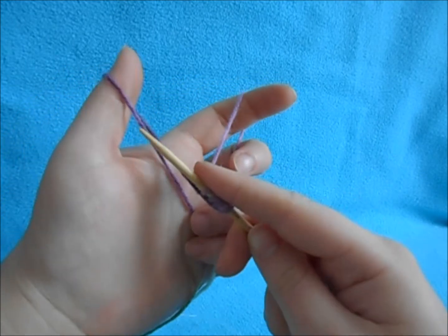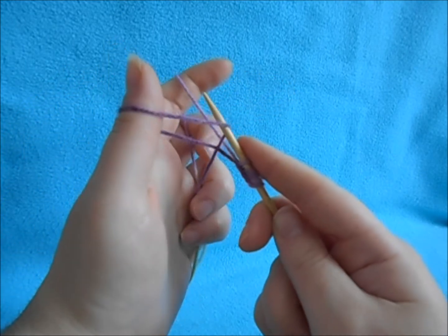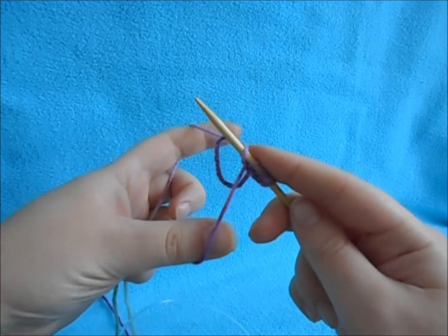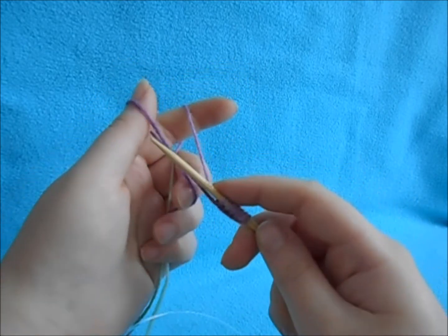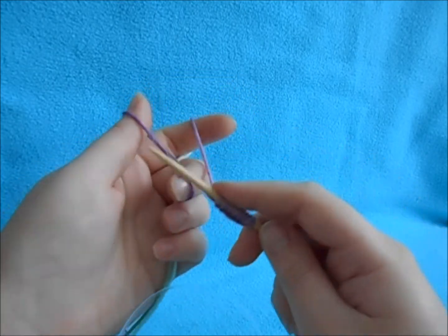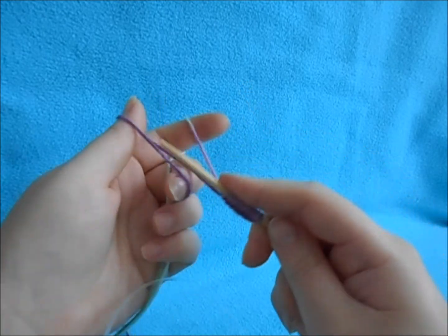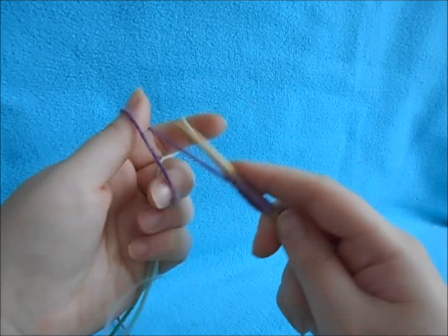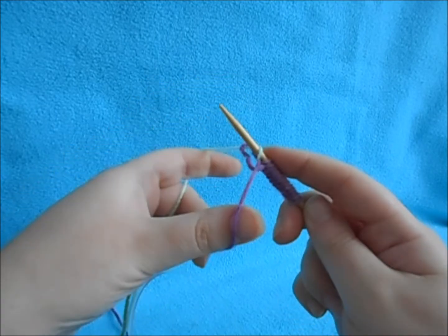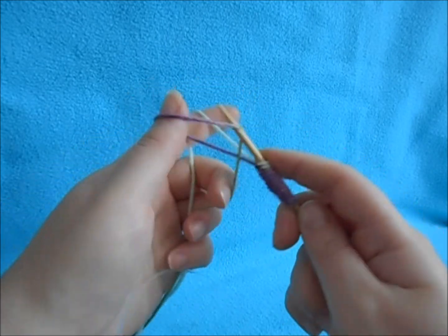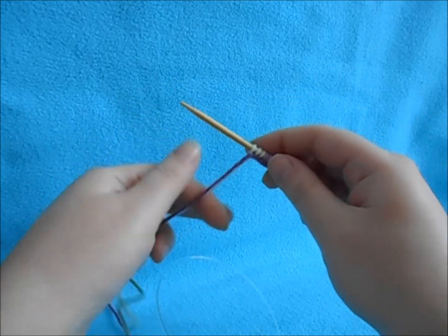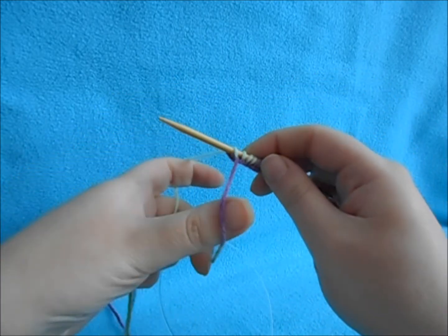So just remember the first loop on your thumb, around to the index finger, and back through the loop. Drop and tighten. And this is the cast on method that I like the best. There are a few different ones out there, and this is the one that I like the most out of all of them. Of course, as you keep knitting, you'll figure out which one you prefer and how you like to do it. Whether it's with the slip knot or the wrap method that I showed.